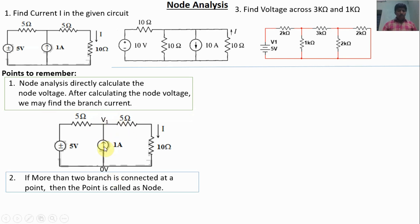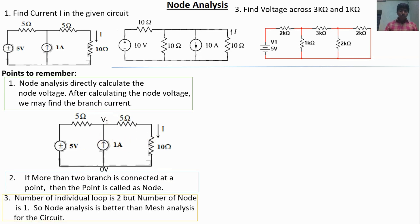Is it possible to solve this problem using mesh analysis? Yes, it is possible. But which method is best? For node analysis, the number of nodes is only one — V1 — so the unknown parameter is one. But in mesh analysis, there are two individual loop currents, so the unknown parameter is two. Node analysis is better because it has fewer unknown parameters — it will be the easiest approach.